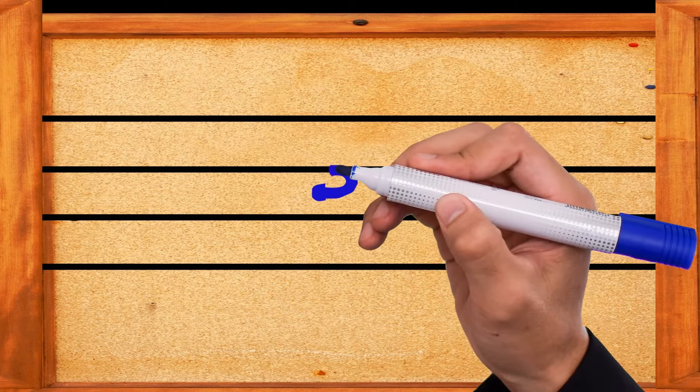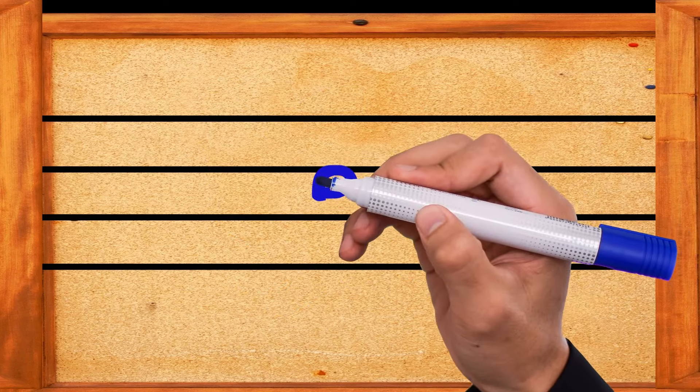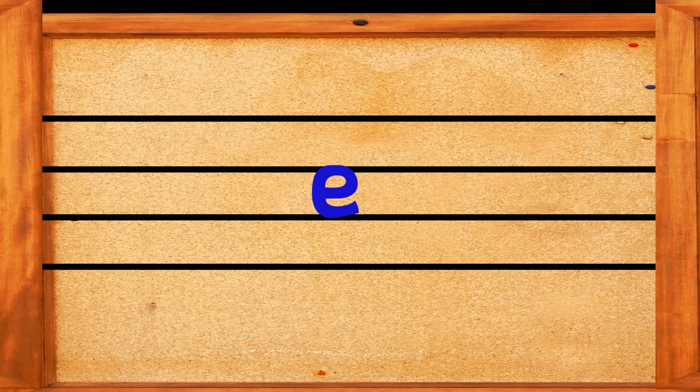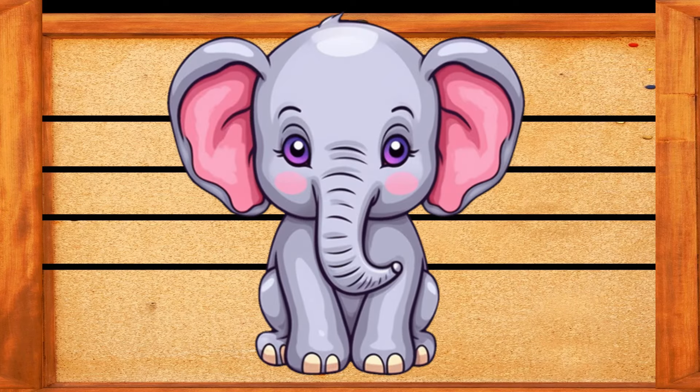Make a small line, then go round and round, make a small curve. This is the letter E. E is for elephant.